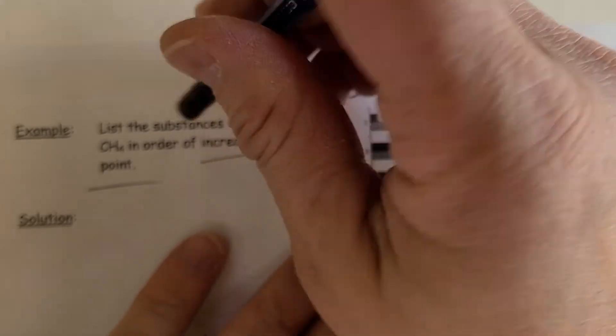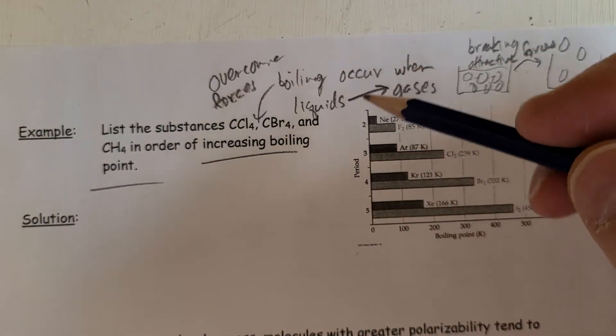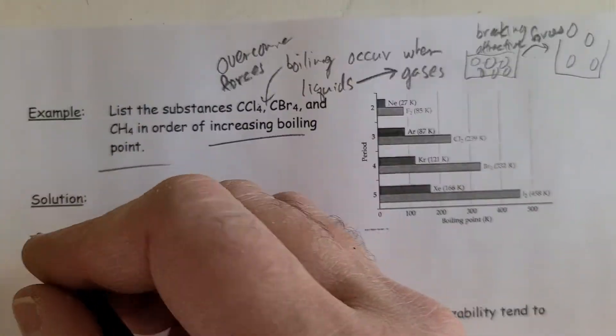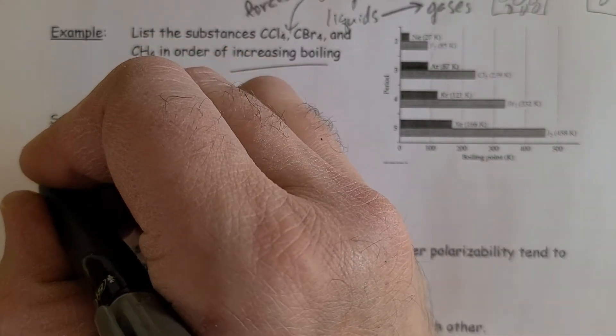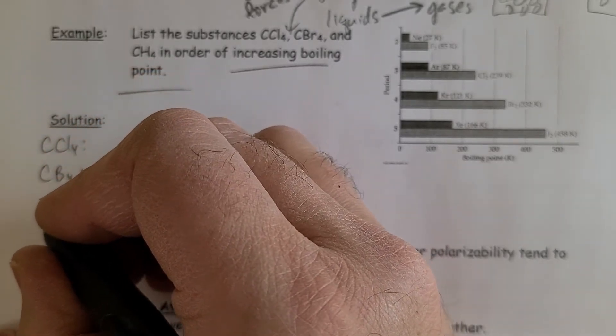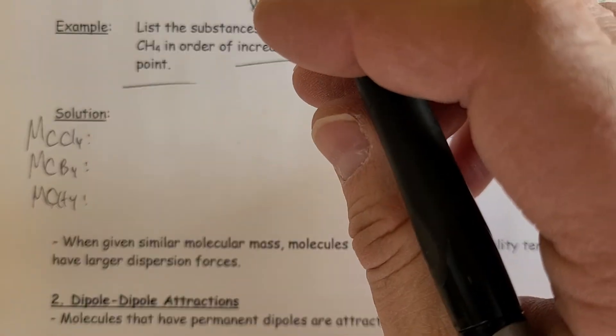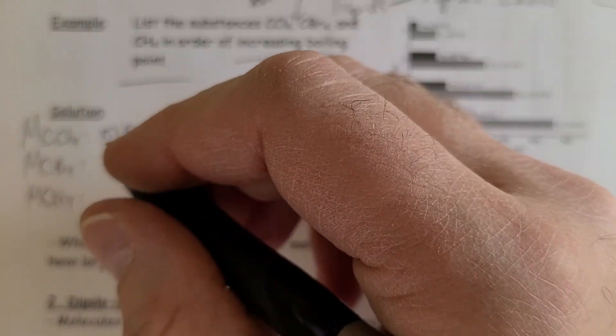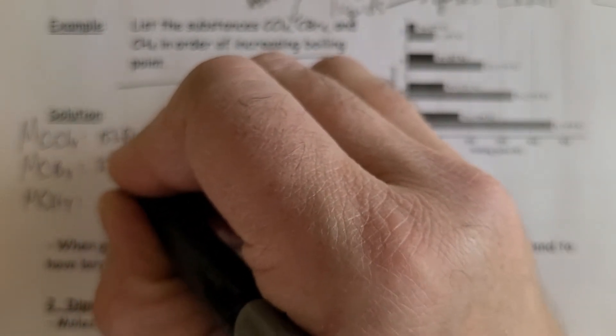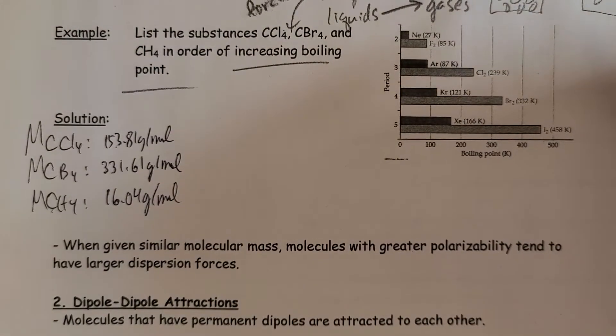If you take a look at molar masses of all of these, carbon tetrachloride, carbon tetrabromide, and methane. So if you look at the molar mass, CCl4 is 153.81 grams per mole, CBr4 is 331.61 grams per mole, and methane is only 16.04 grams per mole.